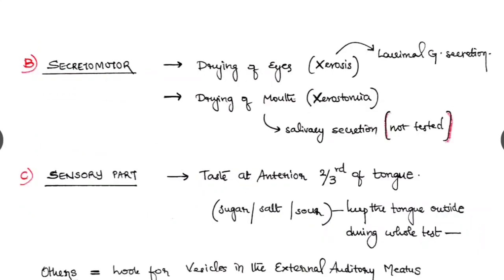Next the secretomotor part. Look for drying of the eyes, that is xerosis. Here it is lacrimal gland secretion is impaired. Look for drying of the mouth, that is xerostomia. The salivary gland secretion is impaired there. But it is not usually tested.